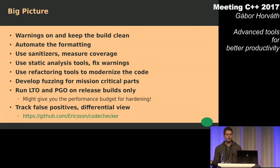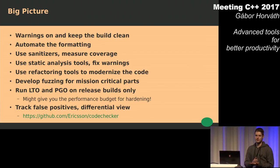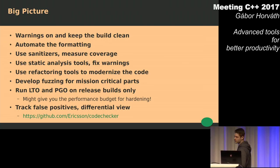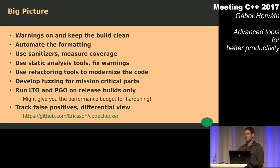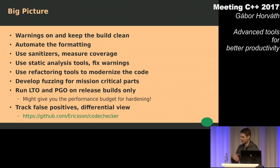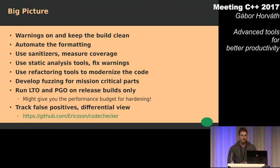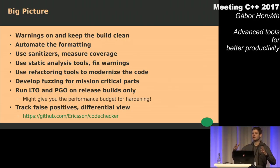If you are running LTO and PGO on release builds, you get more performance. And how should you use this performance budget that you just got? Maybe you can add new features, or maybe you can turn on certain hardening features of the compiler — so without losing any performance, you can get a safer application that is better for your users. And also, in case you care about static analysis, you might want to take a look at CodeChecker, which is a great tool to track false positives and have a differential view about what new findings were introduced in a new release.